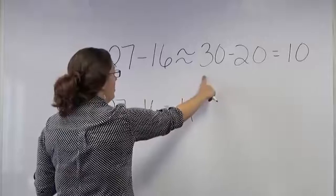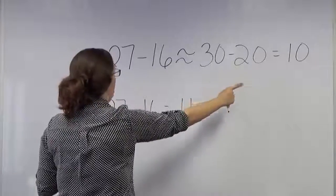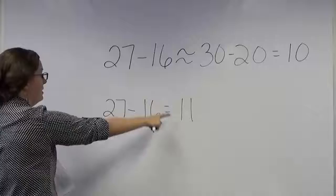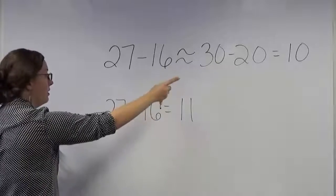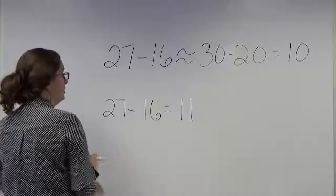Then we would subtract 30 minus 20 and that gives us 10. When we actually subtract 27 minus 16, that gives us 11. Therefore, our estimation was very close to our actual answer.